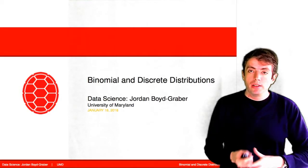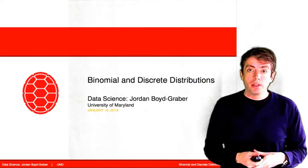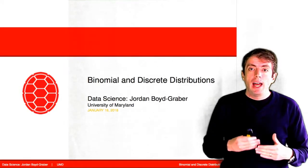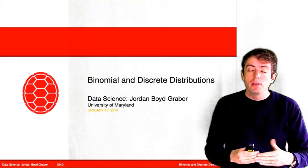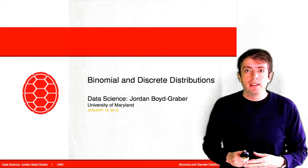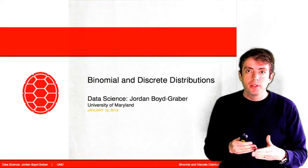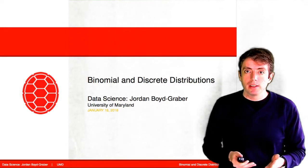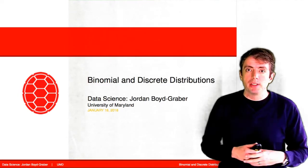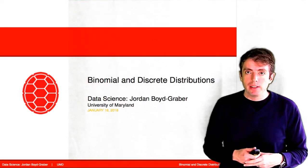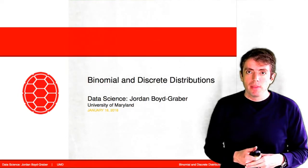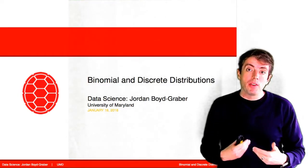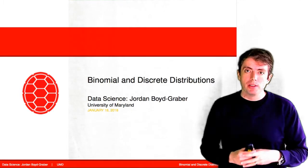We're now going to continue our discussion of discrete probability distributions and go on to more complicated distributions over discrete outcomes, particularly the binomial and discrete distributions. So first let's talk about the binomial distribution.